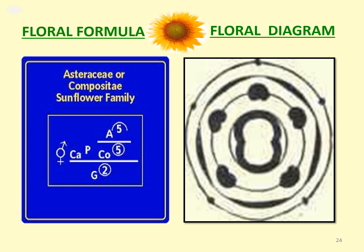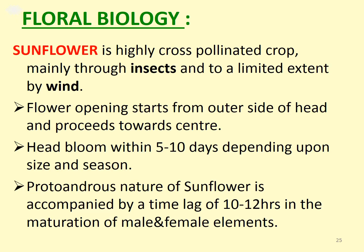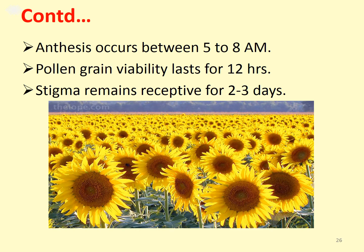The floral formula and floral diagram for the Asteraceae family are given here. It is a hermaphrodite plant. Sunflower is a highly cross-pollinated crop, mainly through insects and to a limited extent by wind. Flower opening starts from the outer side of the head and proceeds towards the center. The head blooms within 5 to 10 days depending upon size and season. Sunflower is protandrous in nature, accompanied by a time lag of 10 to 12 hours in the maturation of male and female elements. Anthesis occurs between 5 to 8 a.m. Pollen grains are viable for the last 12 hours, and the stigma remains receptive for 2 to 3 days.